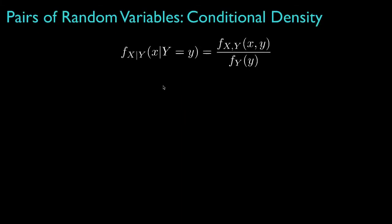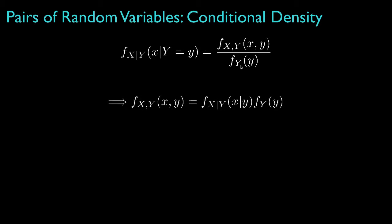The conditional density for a random variable, say x, conditional on the observation of another random variable, say y, is defined as the ratio of the joint density for the two random variables to the marginal density for the conditioning random variable. Therefore, we can write the joint density as the product of the conditional density and the marginal density for the conditioning variable, which is true regardless of which variable we condition on.